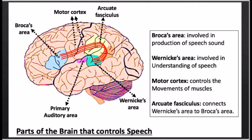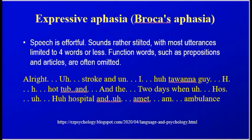Any damage to any of these parts may result in language impairment. In this slide, besides other parts, you can see Broca's area and Wernicke's area. They are involved in speech production and speech understanding respectively. If for some reason — such as interruption in blood flow to the brain due to high blood pressure or other reasons — these parts of the brain get damaged, the patient will experience aphasia, a kind of speech disorder or language impairment.